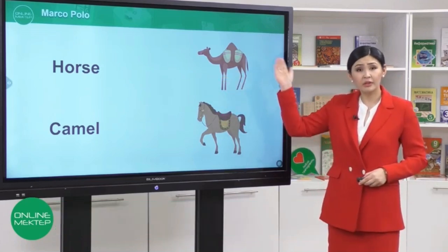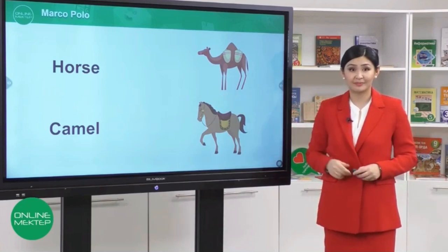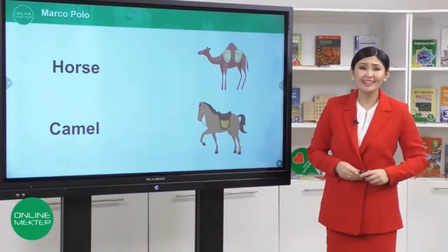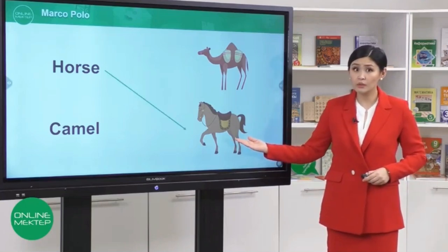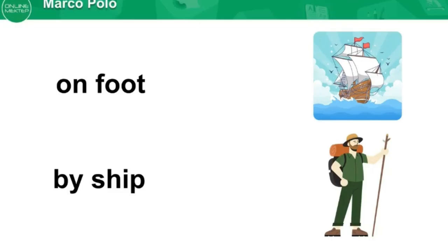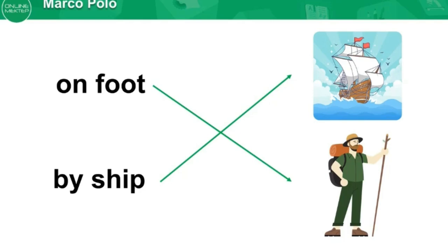Read the words, then look at the pictures and match. You have five seconds — go! Well done. This is a horse and this is a camel. People can travel on foot and by ship. In the first picture you can see a ship, and in the second picture you can see a man traveling on foot.